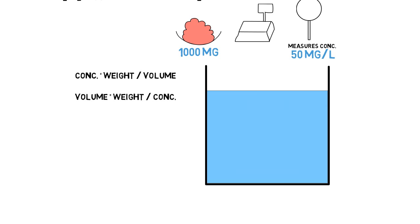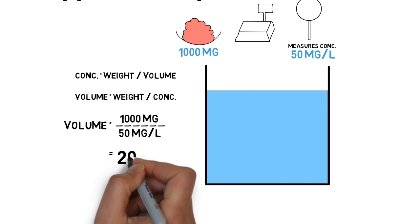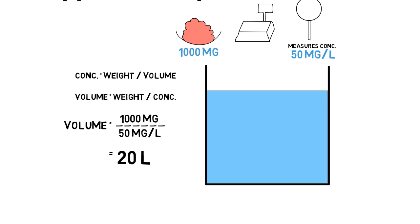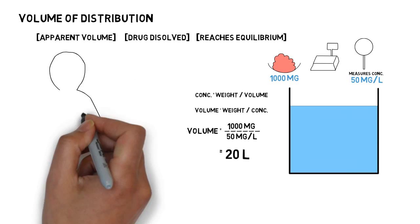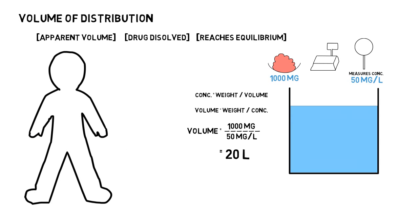So in my example, volume of distribution is equal to 1000 milligrams divided by 50 milligrams per liter, which gives me 20 liters. So 20 liters is the volume of water in the container and it's the volume of distribution of the drug in this example. This is very similar in a human being, where the drug you give is going to get dissolved in certain fluids and occupy that particular space in the human body.